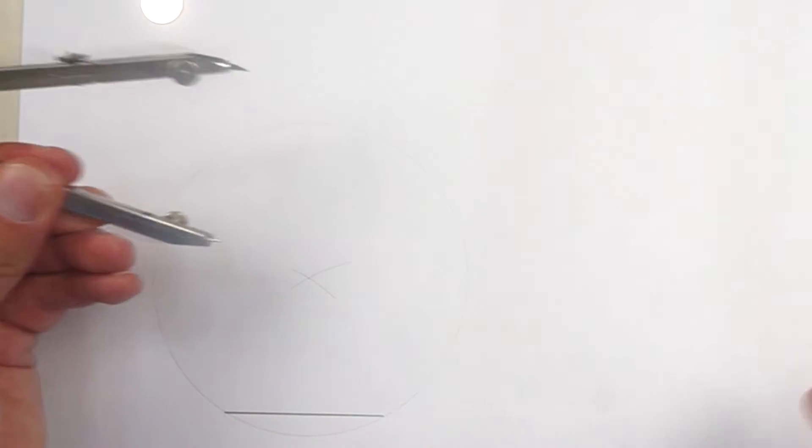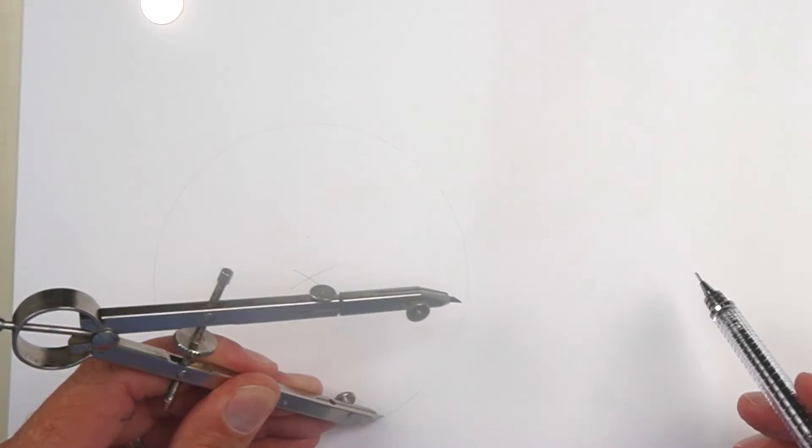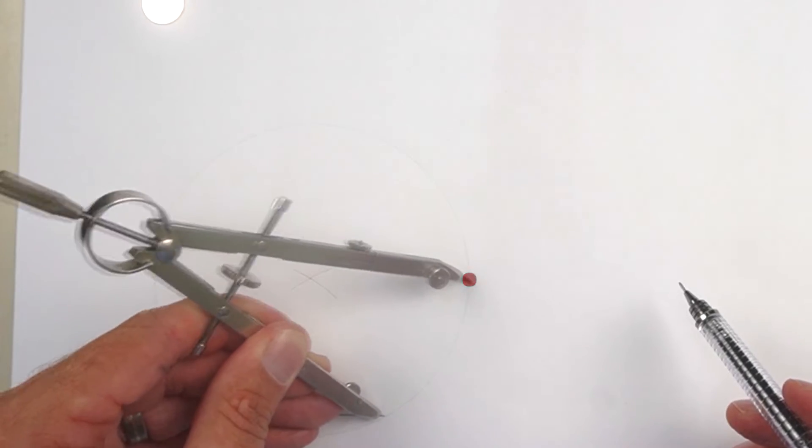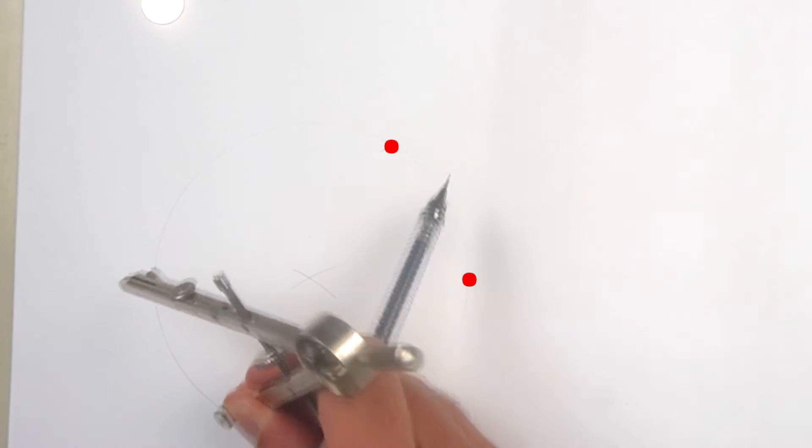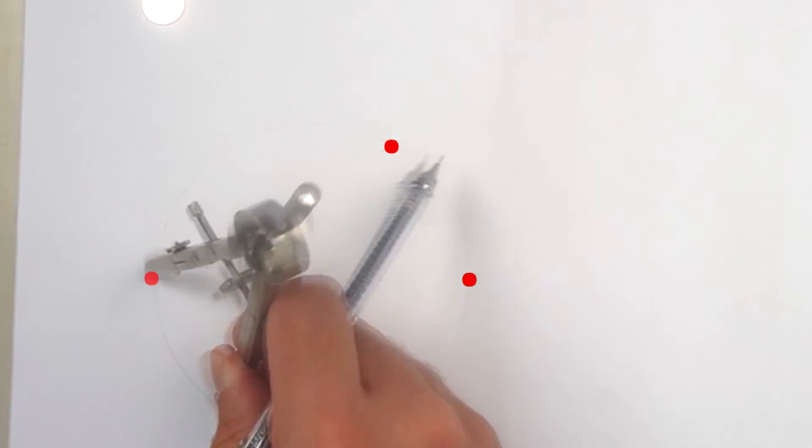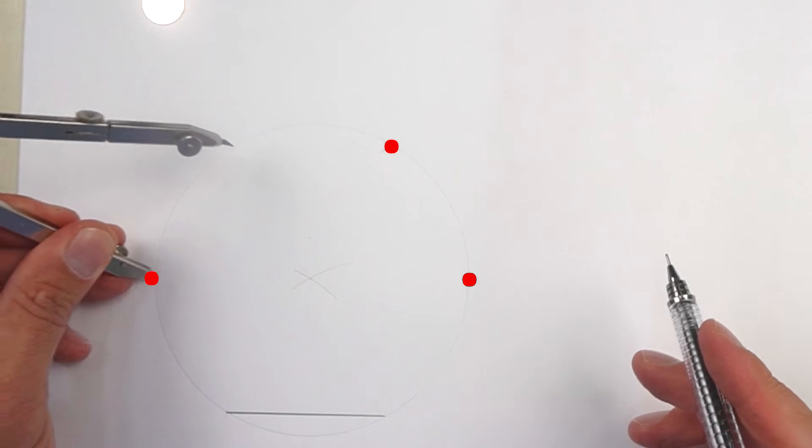Now all you're going to do is walk your compass all around. You can start from any side and make marks as you go along. What you will notice is a hexagon being formed here.